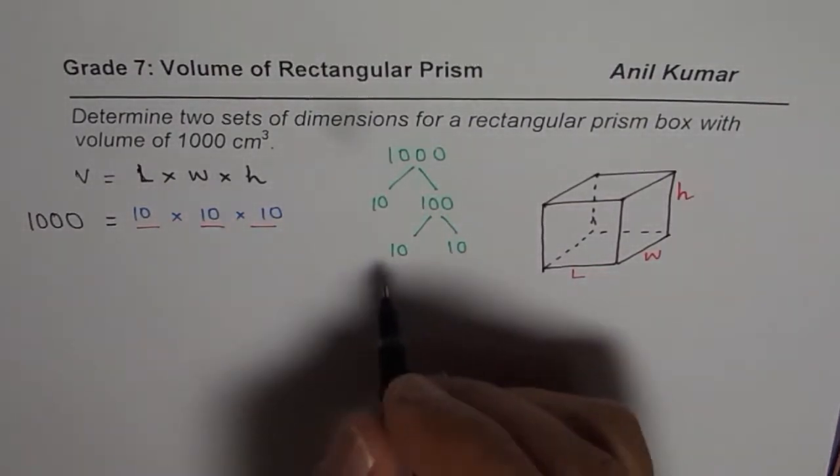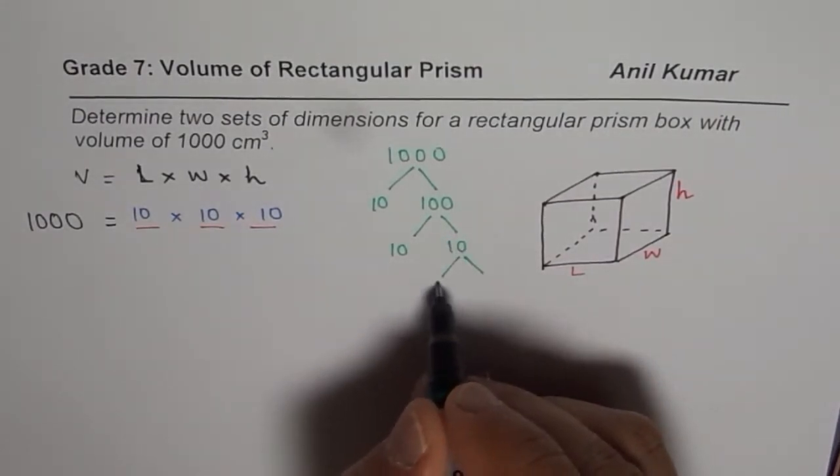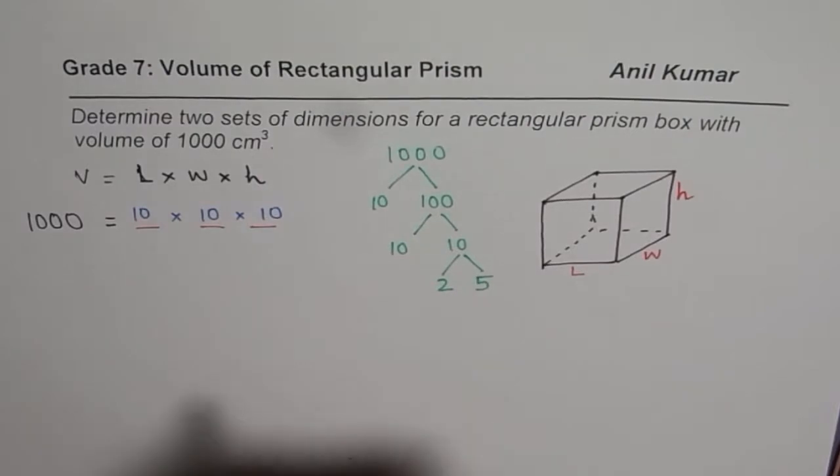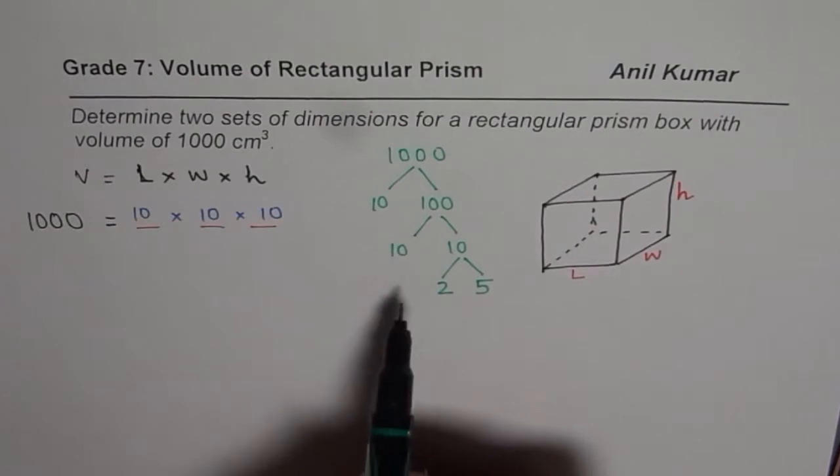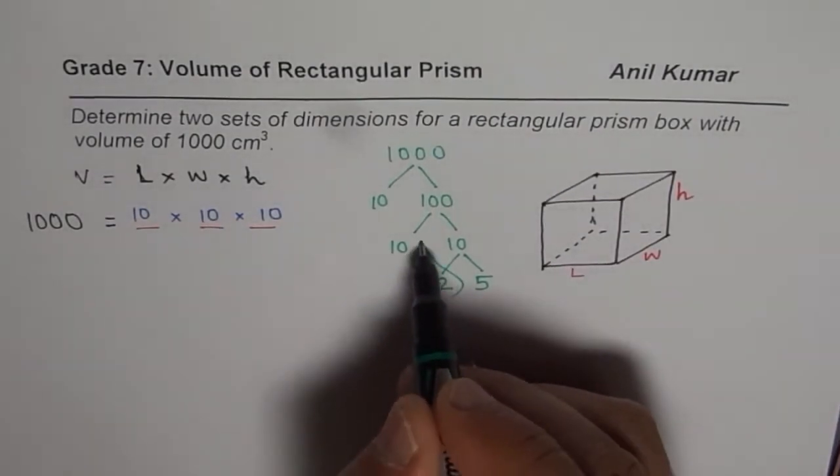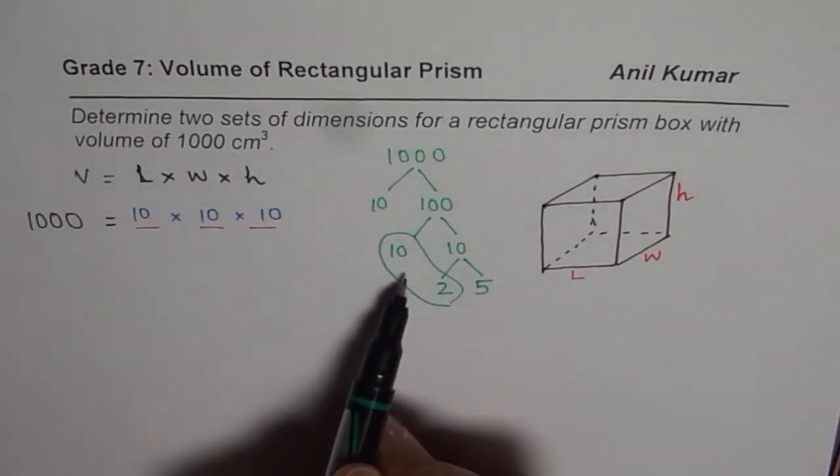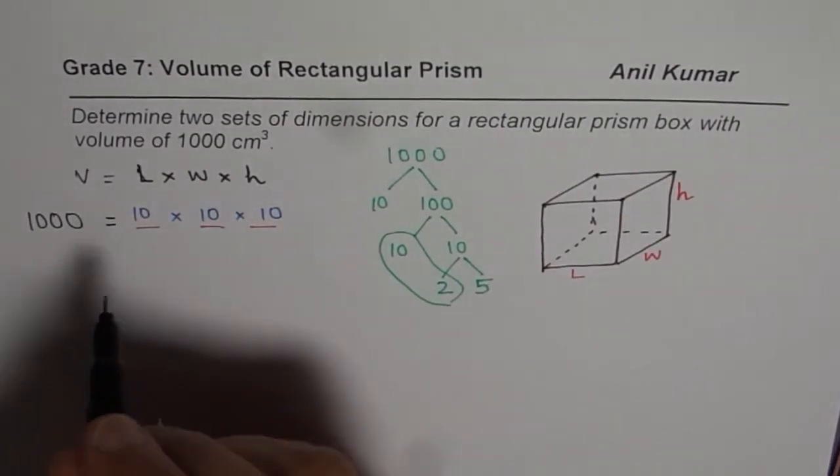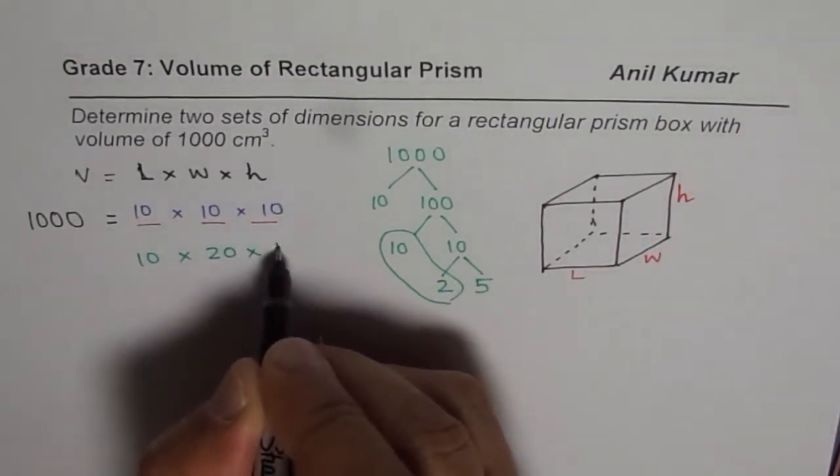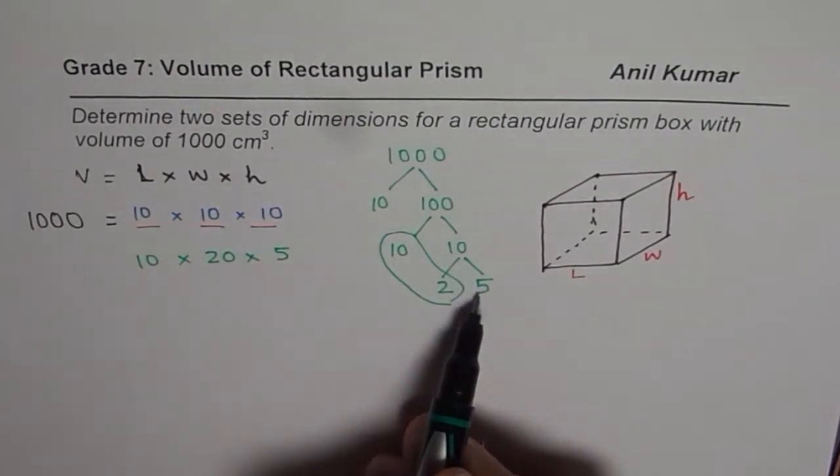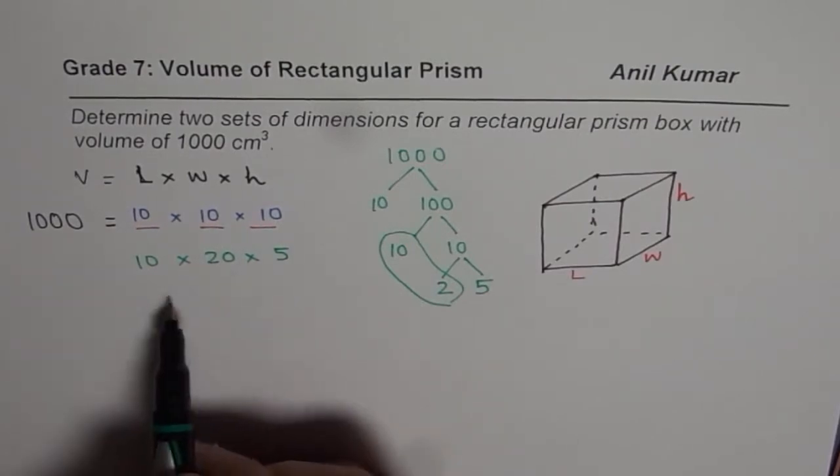But what we could do is, we could further go down this tree. And we can say 10 is like 2 times 5. Now, once we do that, we get so many other options. For example, I could combine two dimensions as these. So now, my dimensions could be 10 times 20 times 5. So second option could be 10 times 20 times 5. So whenever you multiply all these numbers, you'll always get 1000, you can try 10 times 20 is 200 times 5 is 1000. You can use the calculator.